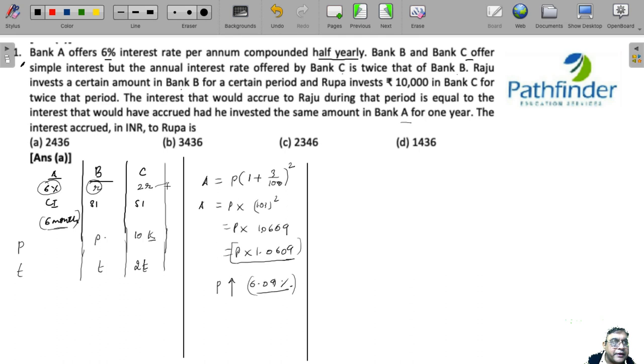What would Rupa's interest be in that case? Rupa's interest is 2R, it must be double of 6.09%, that is 12.18%.